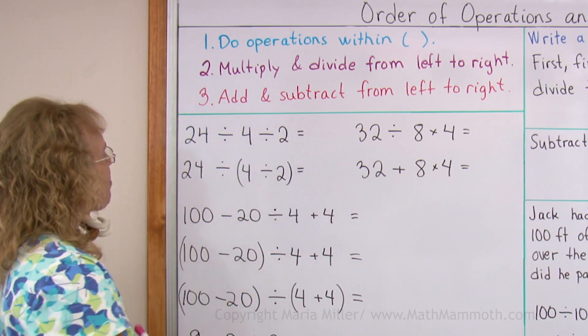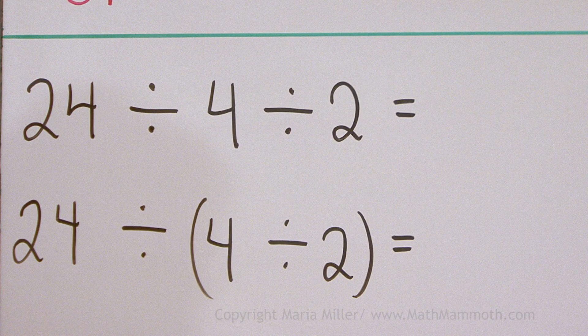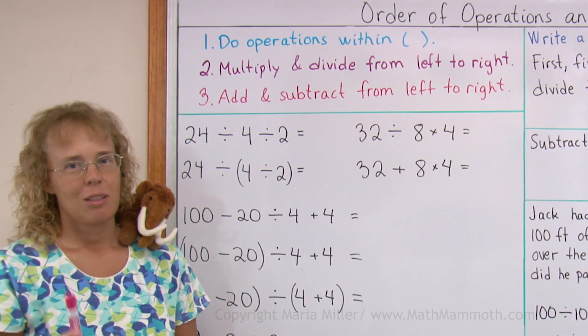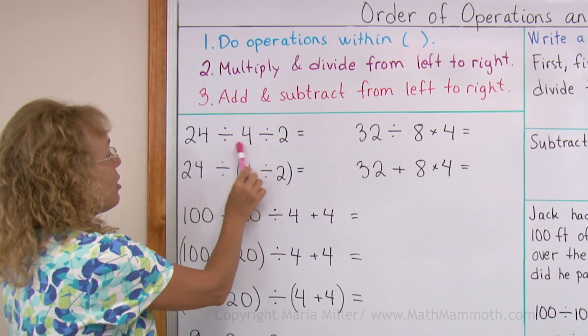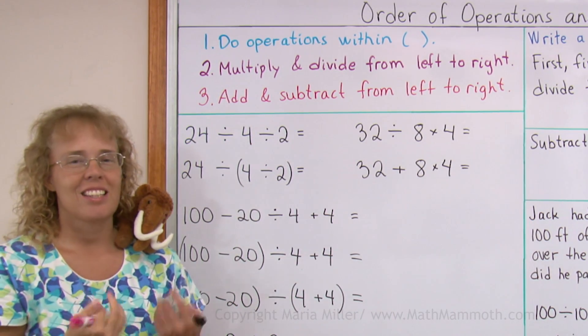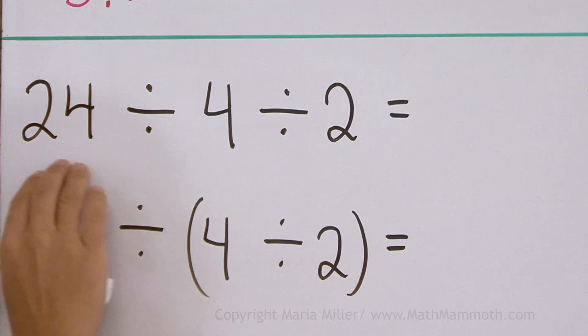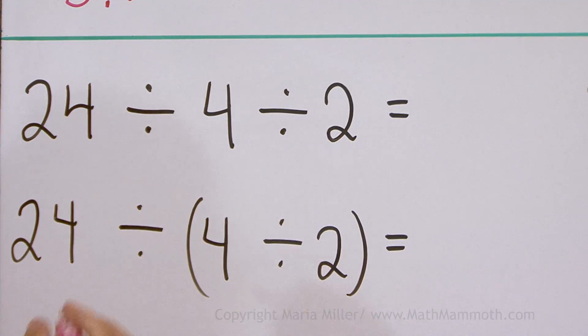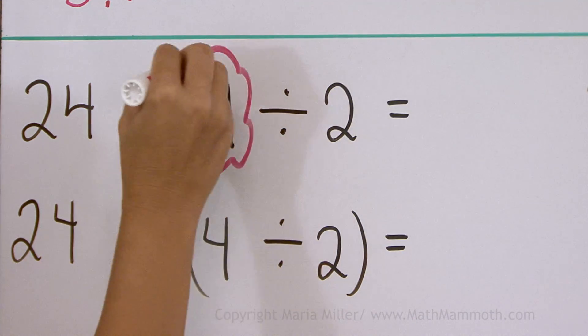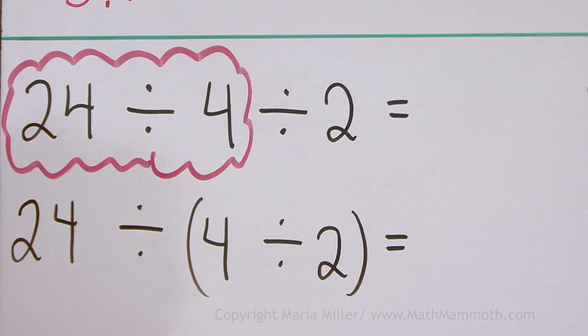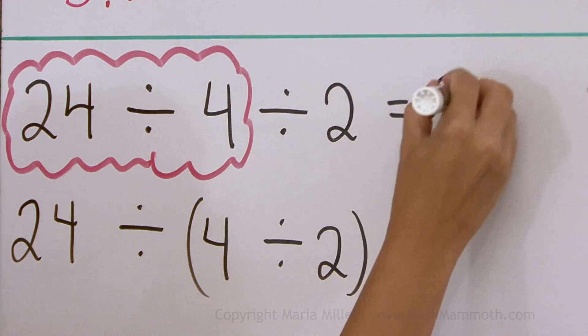So here's our first problem. 24 divided by 4 divided by 2. Which division will we do first? Since there's nothing else, we just go from left to right. And you can draw like a bubble around the operation to be done first. So 24 divided by 4 is 6. And then 6 divided by 2 is 3.